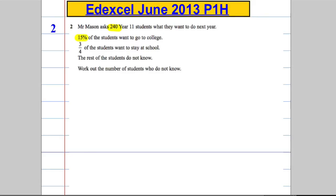15% of the students want to go to college. Three quarters of the students want to stay at home. And the rest, this is important, of the students do not know. Work out the number of students who do not know.